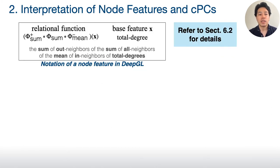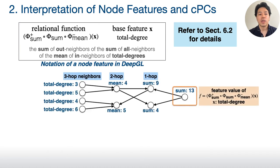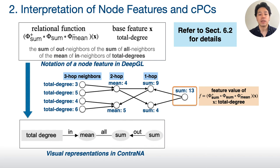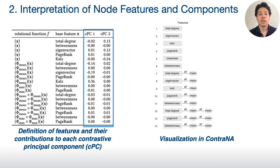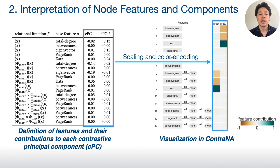Next, we enhance the interpretability of learned features and components. I will provide only a brief explanation; for more details, please refer to our paper. DeepGL could produce a complicated feature denoted with multiple mathematical symbols. The middle figure shows how feature value is computed from one node annotated with orange. By summarizing this computation flow with directed links and text, CONTRANA provides a more intuitive way to understand the node feature. We can now visualize a list of complicated features as shown on the right. The remaining information for interpretation is each feature's contribution to each component. We scale these values between minus 1 and 1 and visualize them as a heat map. A feature either being close to minus 1 or 1 has a strong contribution to the corresponding component.